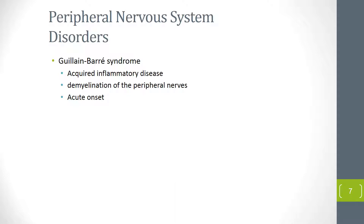In Guillain-Barré syndrome, there is progressive ascending muscle weakness of the limbs, producing symmetric flaccid paralysis. Paresthesia will occur along with loss of motor function. The speed of progression may vary. Paralysis progresses upward in ascending cases, and a significant number of patients will present with involvement of respiratory muscles.